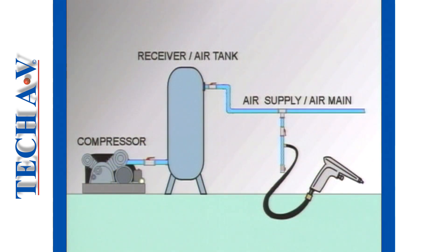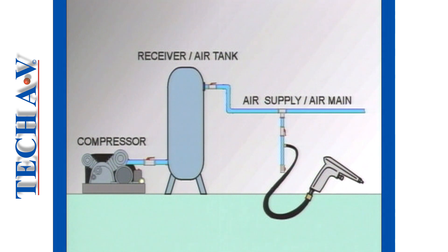This then is a very basic and simple compressed air system: a compressor, to generate the pressure in the air; a receiver, or air tank, to store the energy contained by the pressure of the air; and an air main, to convey or distribute the air to user points, so that the air can be used to drive working units.